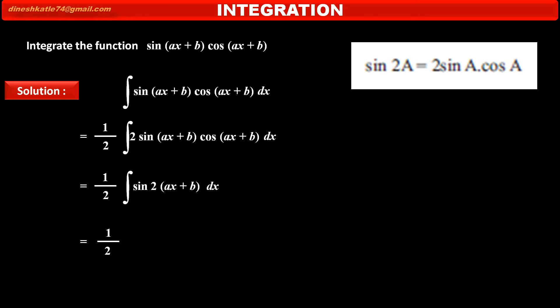This equals 1 upon 2, by taking integration of sin(2(ax+b)), we get minus cos(2(ax+b)) upon the coefficient of x, that is 2a, plus constant c.